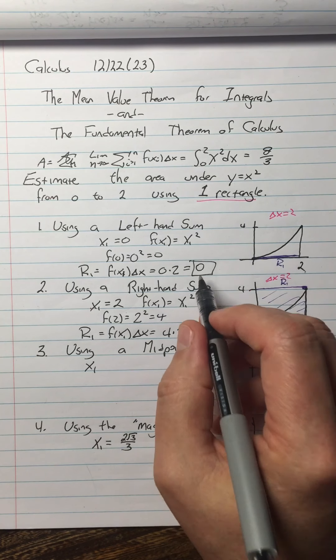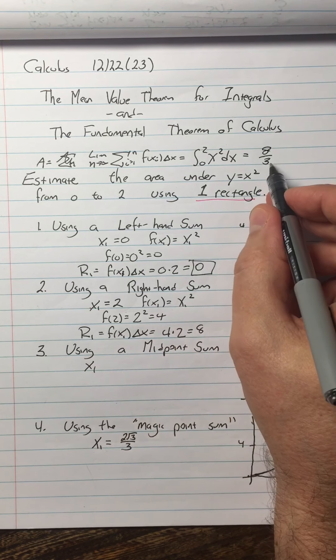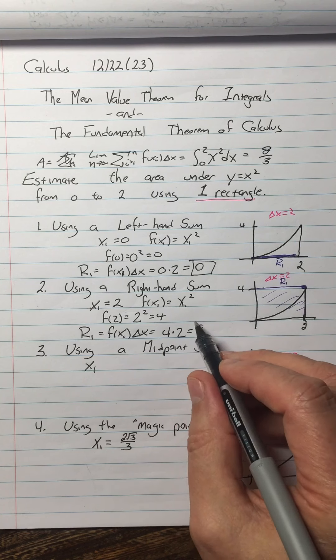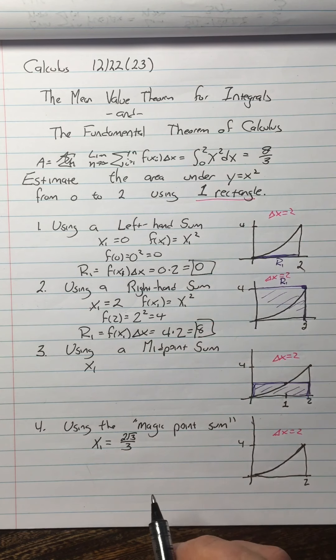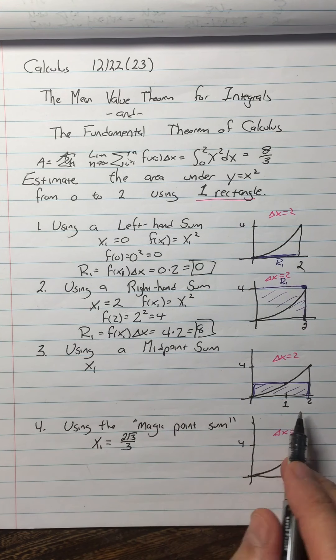So our initial estimate of 0, not very good approximation for 8 thirds. 8, not very good approximation for 8 thirds. Now for the midpoint, the x1 is 1.